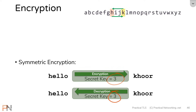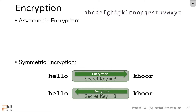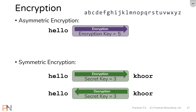That's a simple example of symmetric encryption. Notice in particular that the same key was used for both encryption and decryption. Now let's talk about asymmetric encryption — it's a little different. With asymmetric encryption, I'm still going to use an encryption algorithm, but the keys used for encryption and decryption are going to be different.